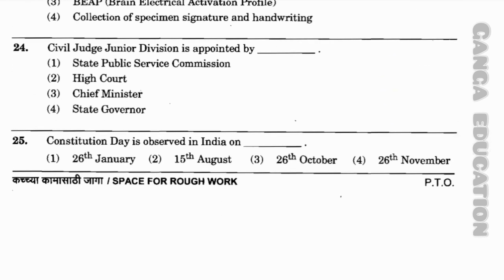Question number 24: Civil Judge Junior Division is appointed by — option 1: State Public Service Commission; option 2: High Court; option 3: Chief Minister; option 4: State Governor. The correct answer is option 4 — State Governor.